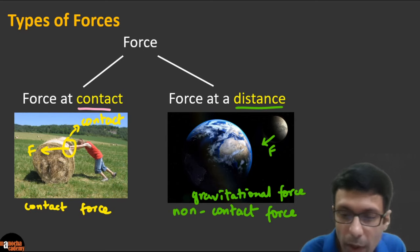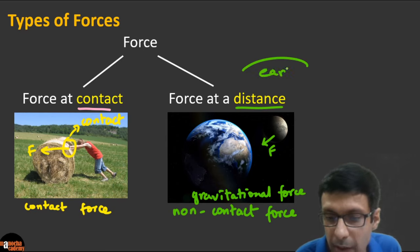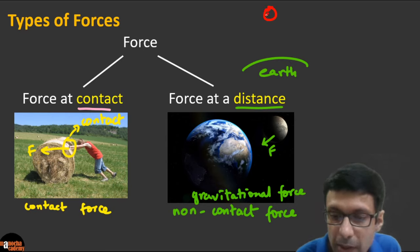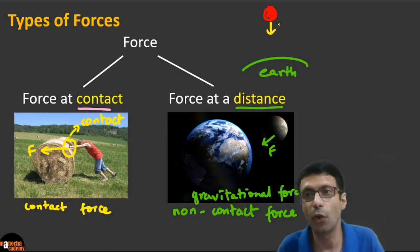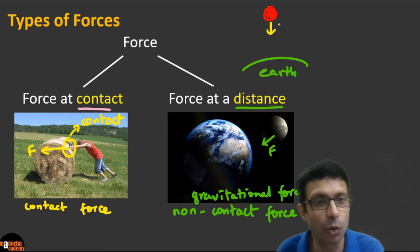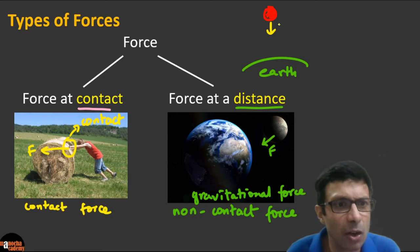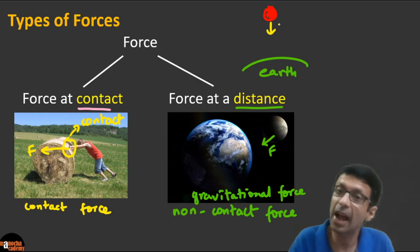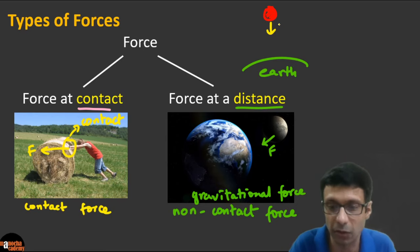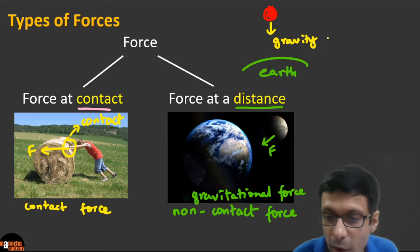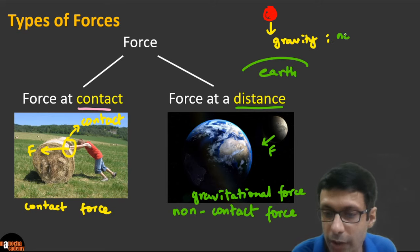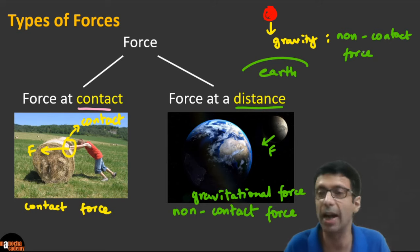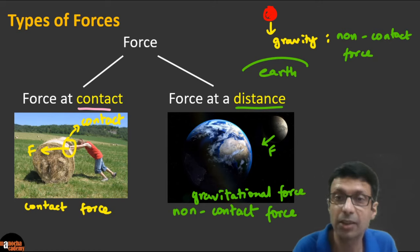Similarly, when a ball is falling towards the earth, is it a contact force or a non-contact force? Gravity can act from a distance — you don't have to be touching the earth. So gravity pulling the ball down is an example of a non-contact force, or force at a distance.